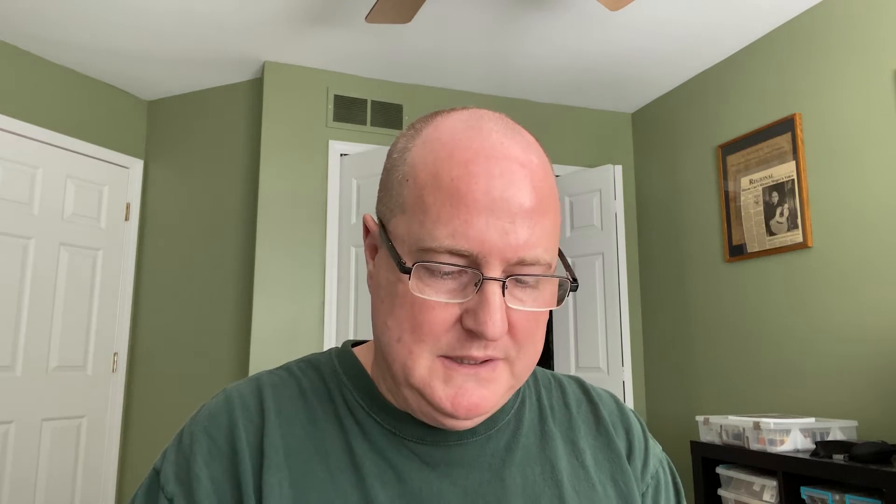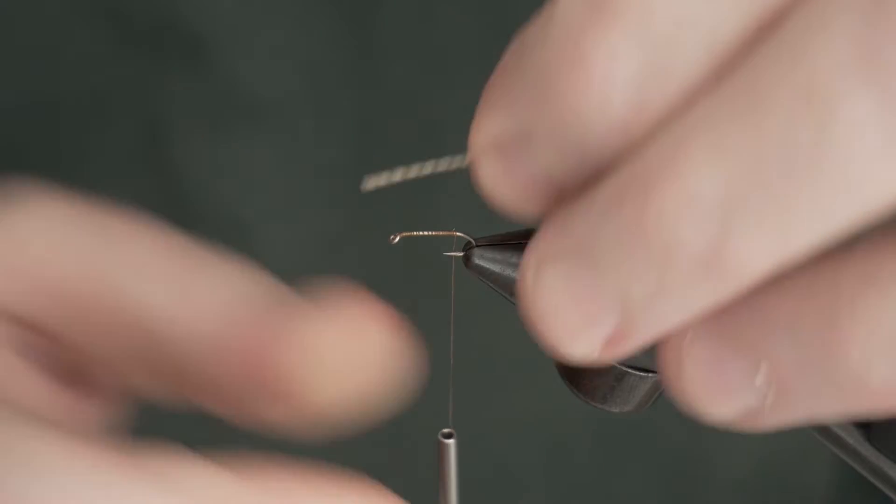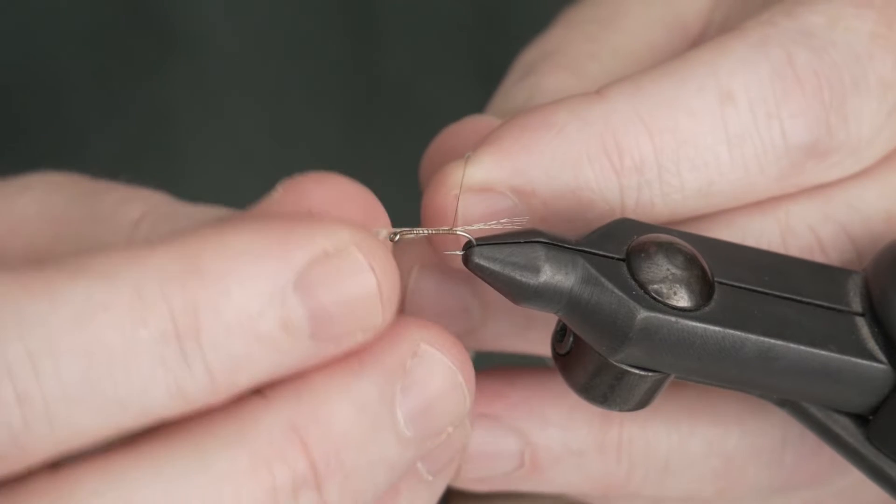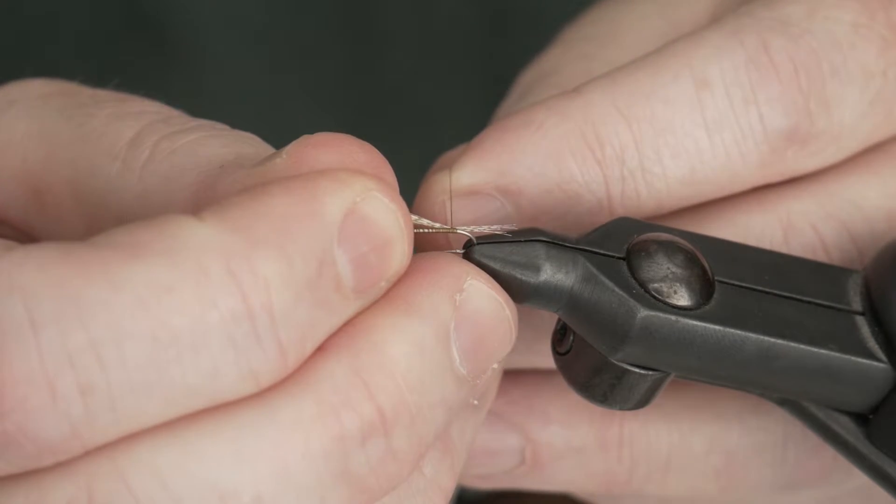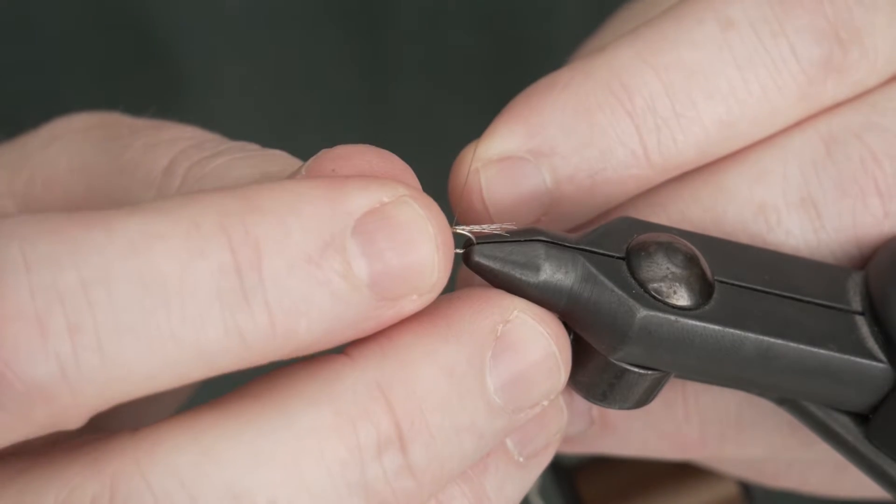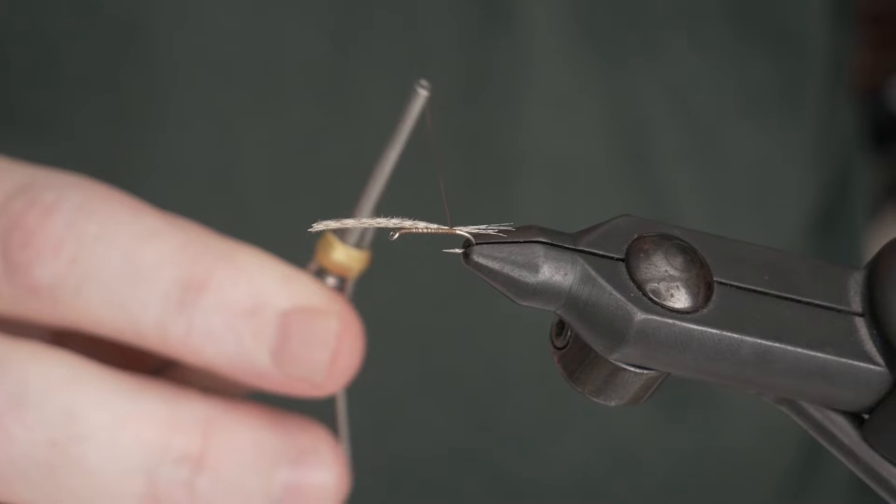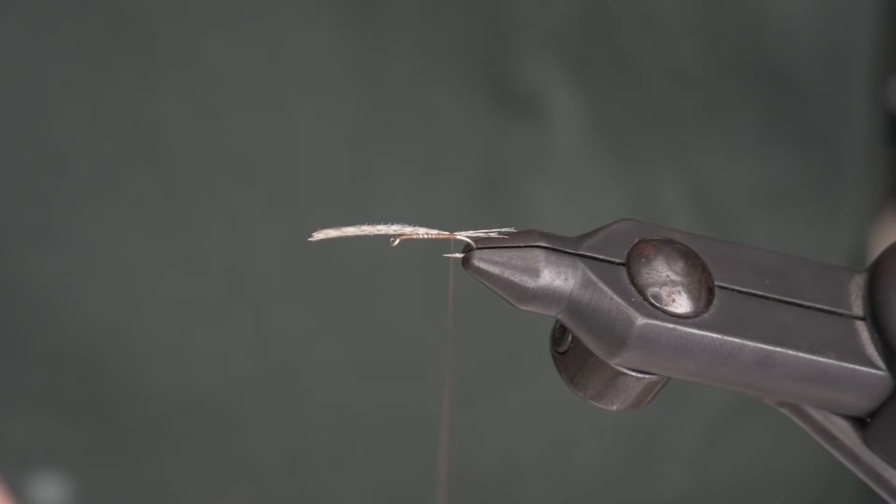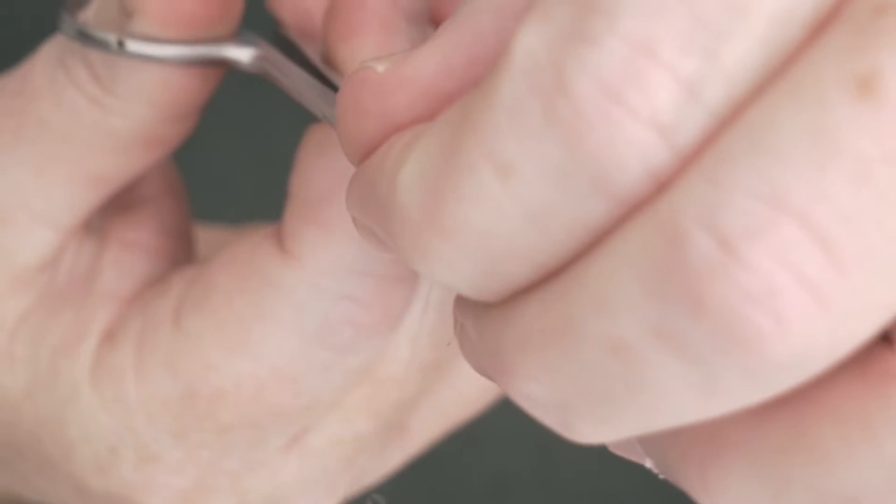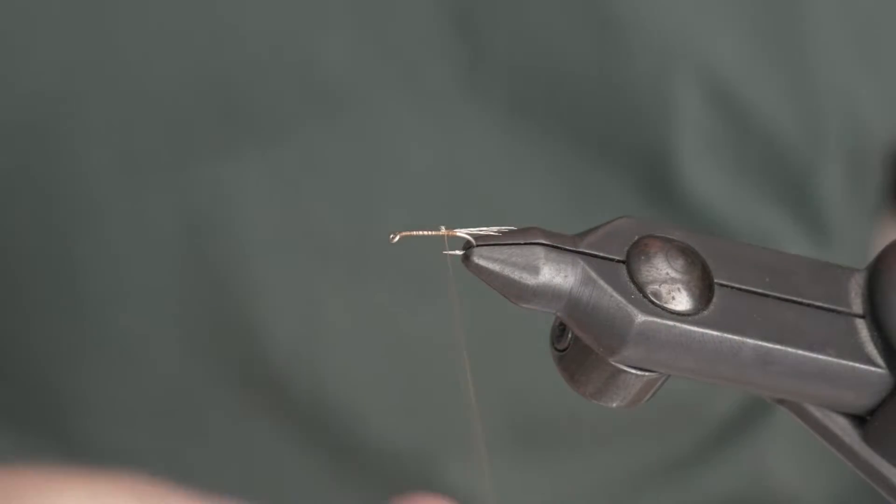After my thread base is down I'm going to tie in a tail of dyed mallard flank. Two loose wraps just to get it on there. And then I like to pull it until I get the length I want. I'm looking for about half to two-thirds of the hook shank length. Throw a couple more wraps on there tighter, secure it. Trim our excess off.